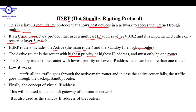The standby router is the router with the lowest priority, or the lowest IP address. Priority is a very important thing. When you are given a topology and a router has a specified priority and IP address, give priority the first option. Whenever a router has the highest priority, choose it — even if it has the lowest IP address. The router with the lowest priority should be the backup or standby router.